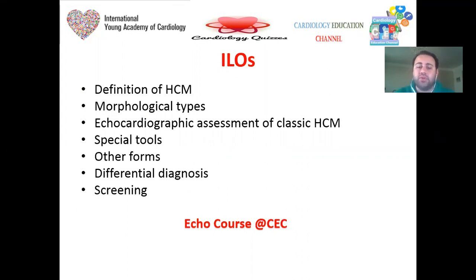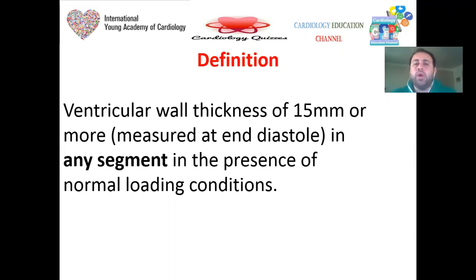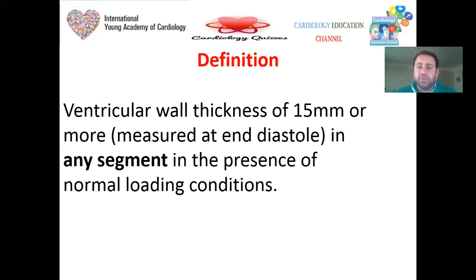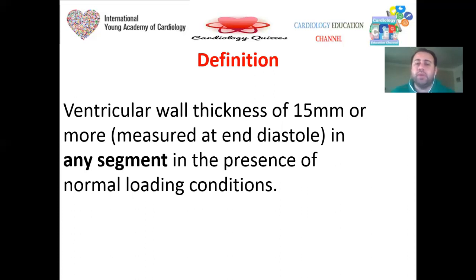Starting with the definition: we may think HCM is asymmetrical hypertrophy, LVOT obstruction, or SAM — but really, the definition is none of the above. The real echocardiographic definition of HCM according to the ESC guidelines is ventricular wall thickness — and we say ventricular, meaning right or left — of 15 millimeters or more at any segment, measured at end diastole in the presence of normal loading conditions.